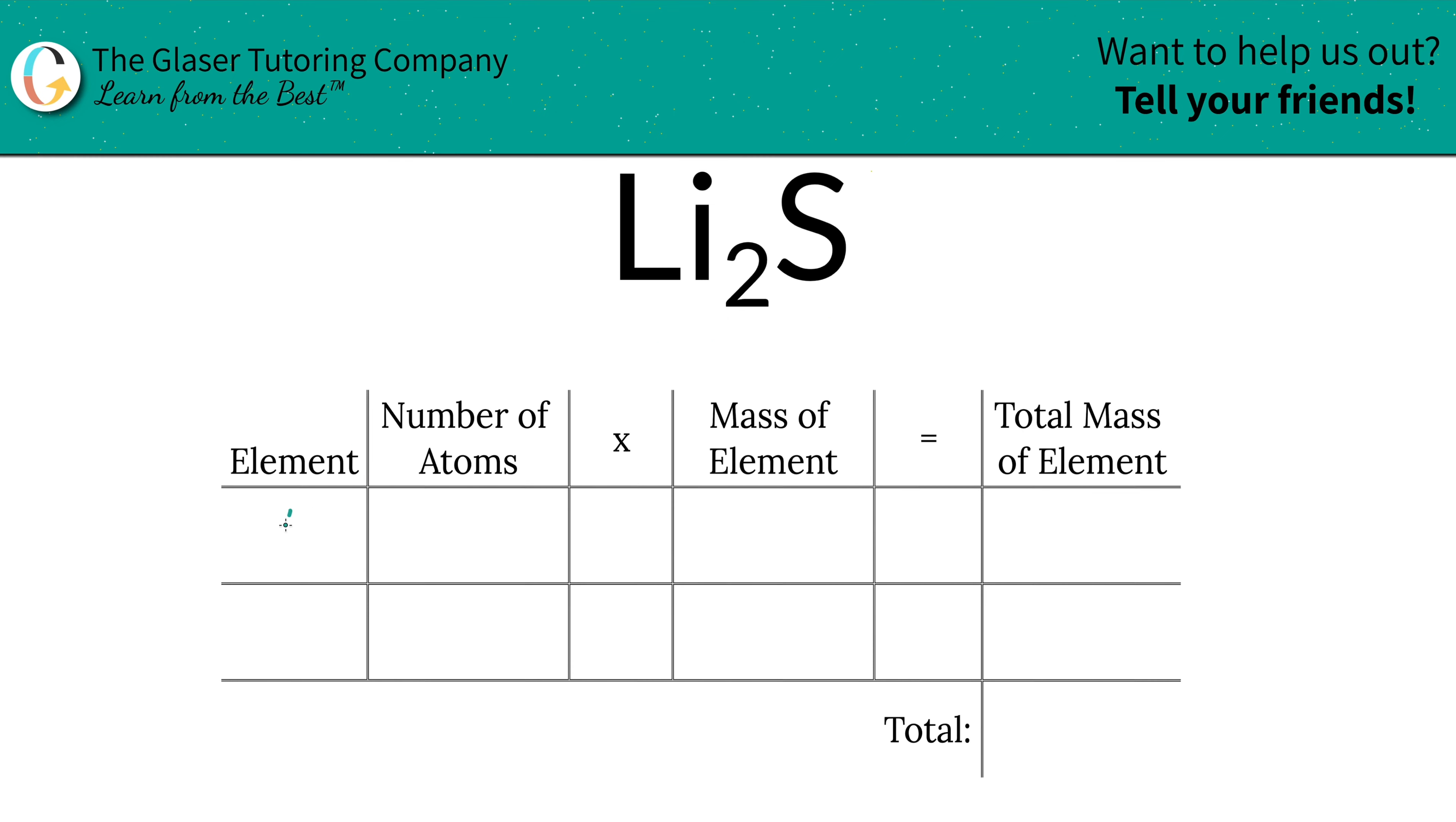So the first thing is I'm going to write the elements I see in the compound. We've got lithium, we've got sulfur. Next is to write down the number of atoms. That's where the subscripts come into play - they tell you the number of atoms of each or the number of moles depending upon your perspective. But for this problem it doesn't really make a difference. Lithium there's going to be two, sulfur there's one.